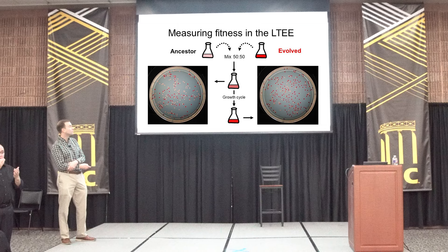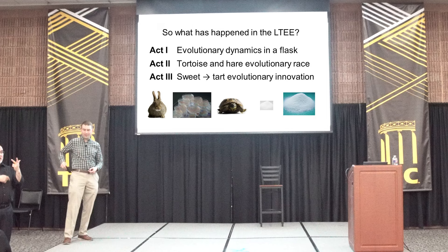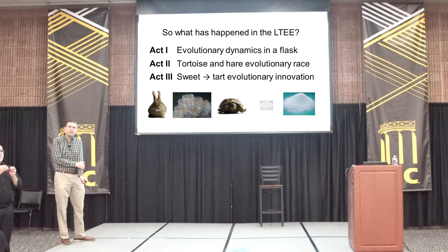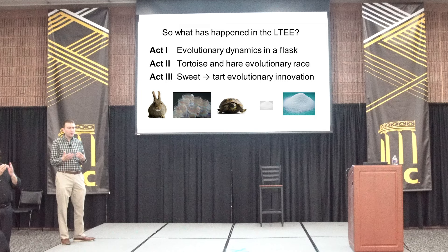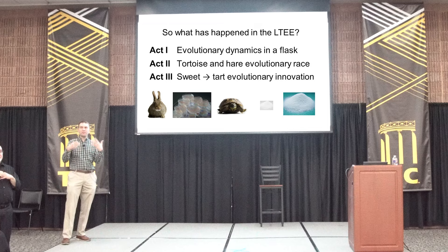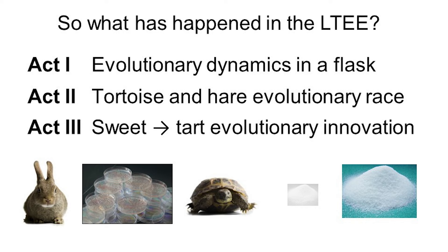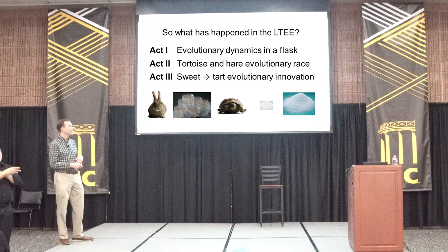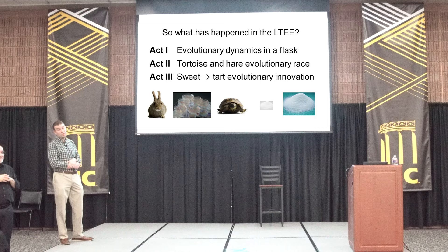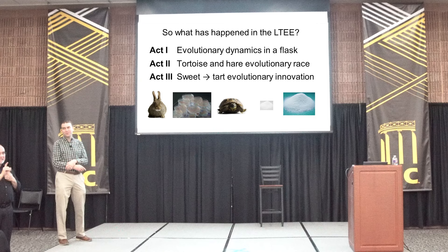I'm going to tell you about three short stories. The first is a little more background - how to think about a microbe that's dividing, with mutations occasionally popping up in offspring and accumulating over time. Mutations that increase in frequency are those out-competing the ancestor or other mutants. Then I'll tell you about two stories where mixing different mutations leads to interesting outcomes: one is an evolutionary race with a tortoise and hare type analogy, and the other is an evolutionary innovation where things move from using glucose to using citric acid - which is an ingredient in tart candies.